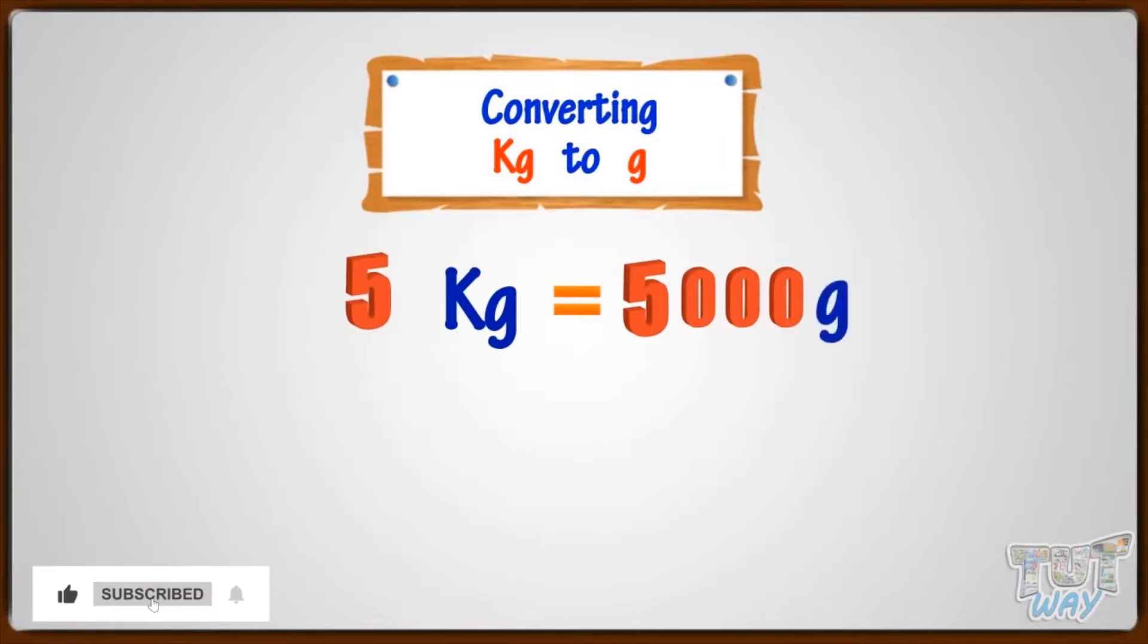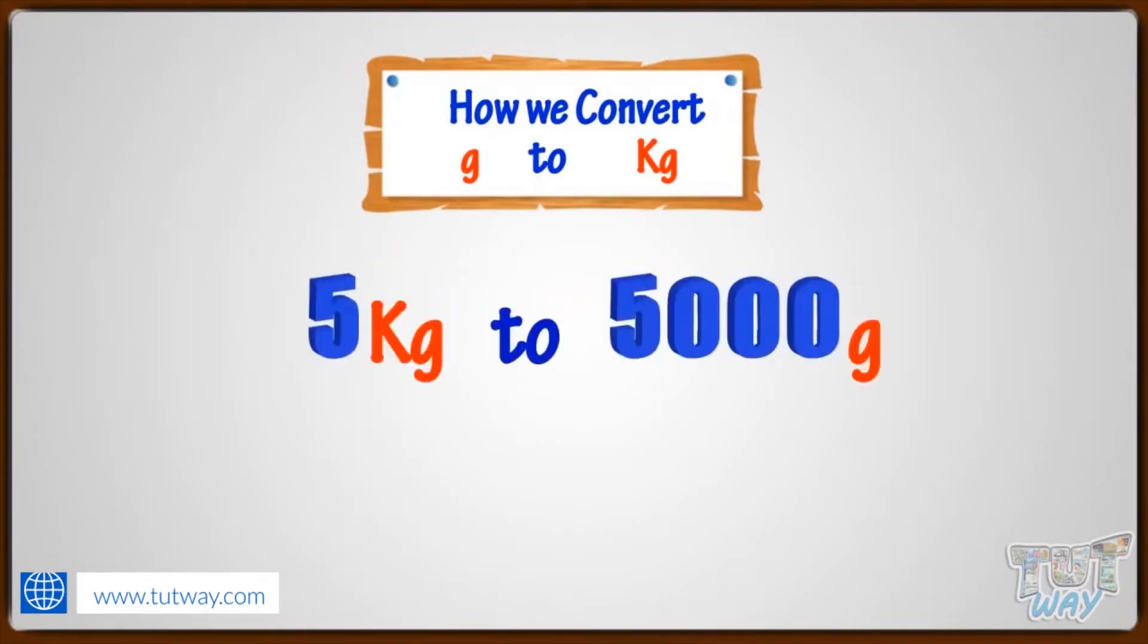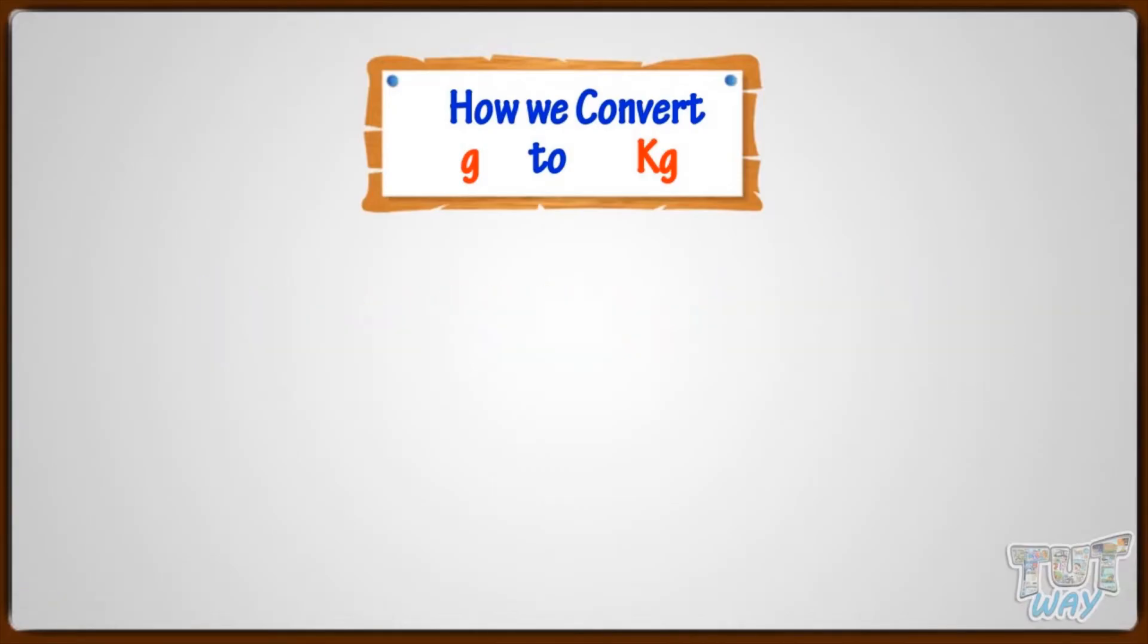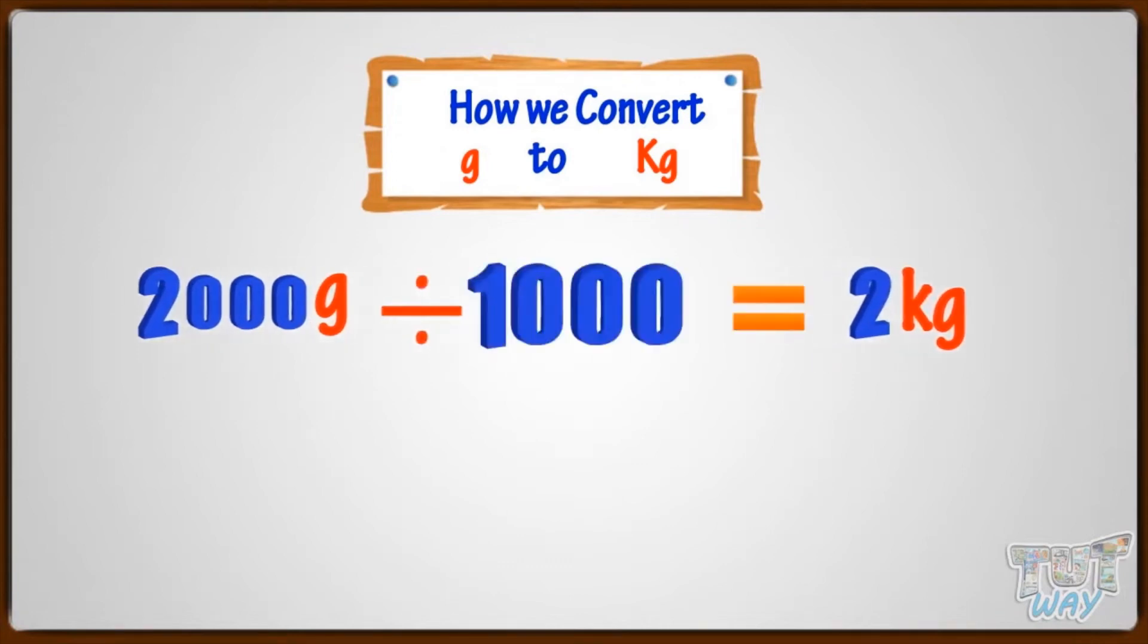Now let's learn how we convert grams to kilograms. Whenever we convert the bigger unit to smaller unit, we use multiplication. That is why we multiply with 1,000 to convert kilograms to grams. And whenever we convert the smaller unit to bigger unit, like we have to convert grams to kilograms, we will be dividing.